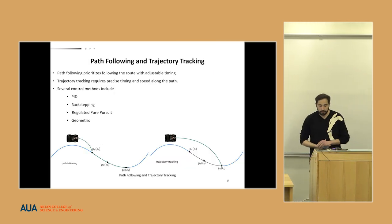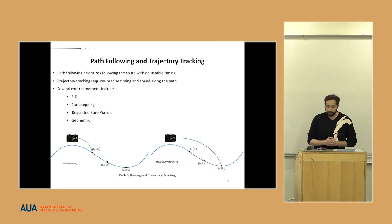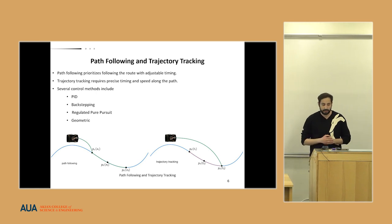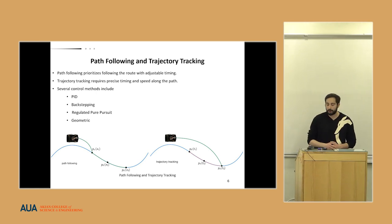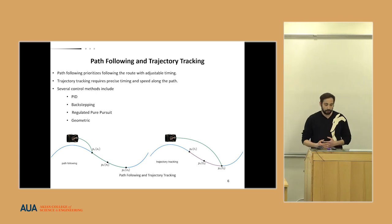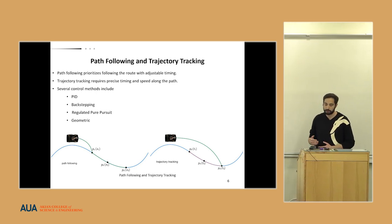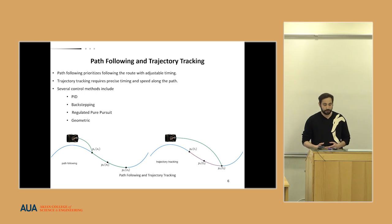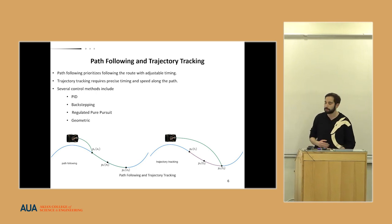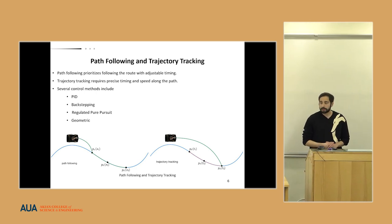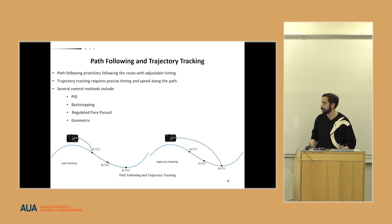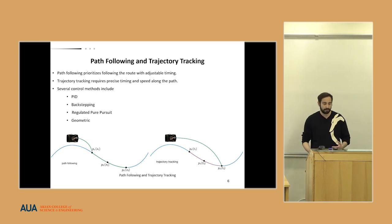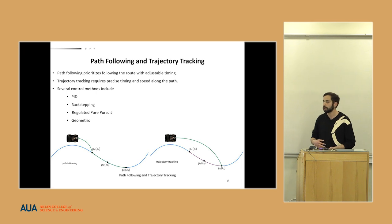Differential drive vehicles can solve several problems such as path following and trajectory tracking. Path following prioritizes following the route with adjustable timing, while trajectory tracking requires precise timing and speed along the path. There are a lot of control systems that can solve these problems, including PID, backstepping, regulated pure pursuit, and geometrical control.